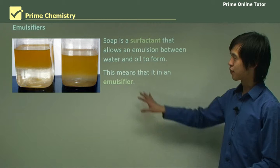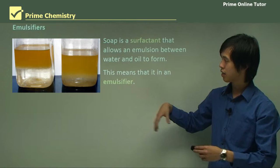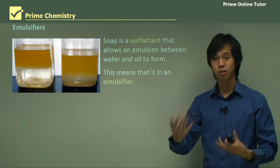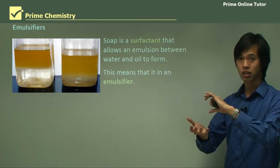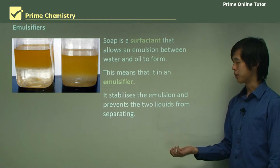Looking at the picture, on the left-hand side we see oil and water where the oil is sitting on top of the water. On the right-hand side, when we have soap, the oil is now evenly distributed throughout the water because the soap has broken down the oil into small droplets, distributing them through the water. Soap also stabilizes the emulsion and prevents the two liquids from separating.